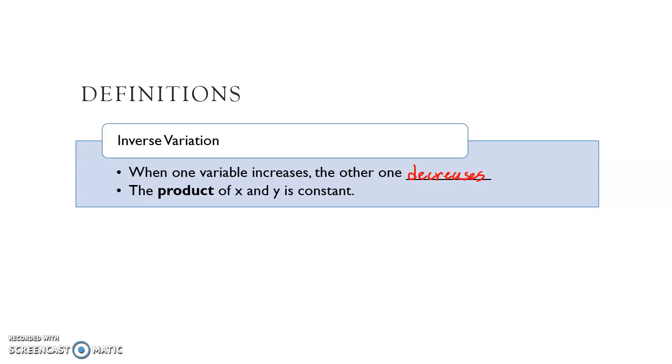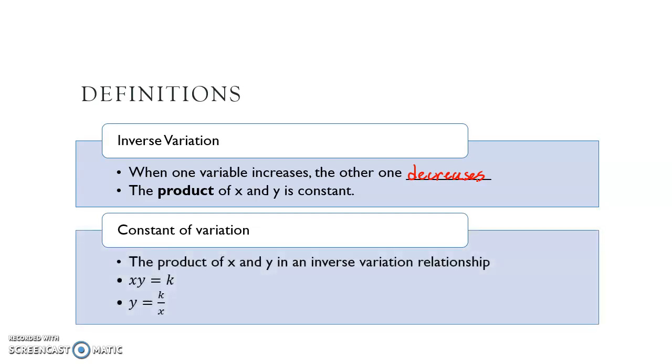If I multiply my x-coordinate times my y-coordinate, I'm always going to get the same number in inverse variation. That number is called the constant of variation, the number you get when you multiply x and y together. We sometimes use k to stand for constant, so x times y equals k. The way we write the function then is we divide both sides by x and get y equals k divided by x. That's the most basic type of rational function because it's a fraction with an x in the denominator.